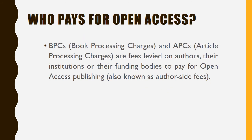Who pays for open access? The answer is the author, because the author wants more citations and more publicity for the article. Article processing charges (APC), also known as author-side fees, are fees levied on the authors, their institutions, or funding bodies to make a particular article or book open access. Looking at publishers like Wiley or Taylor and Francis, the APC amounts to around two thousand to three thousand dollars, varying between different journals based on their rankings and ratings.